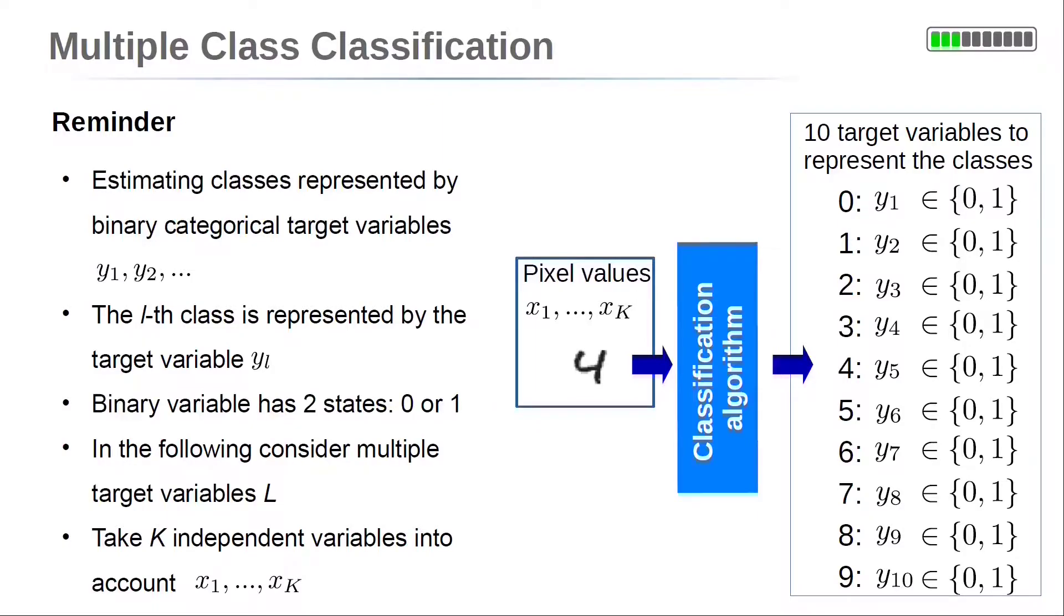Let us quickly reconsider a multiple class classification problem. In the previous section, we considered the example of handwritten digit recognition. All digits from 0 to 9 are represented by different classes.